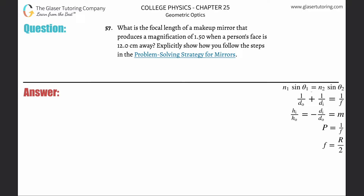Number 57. What is the focal length of a makeup mirror that produces a magnification of 1.5 when a person's face is 12 centimeters away? Explicitly show how you follow the steps in the problem solving strategy.